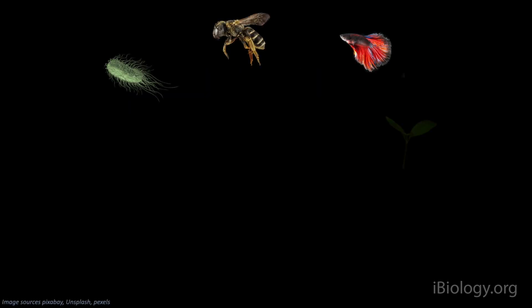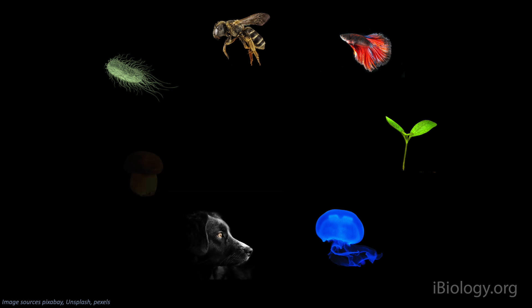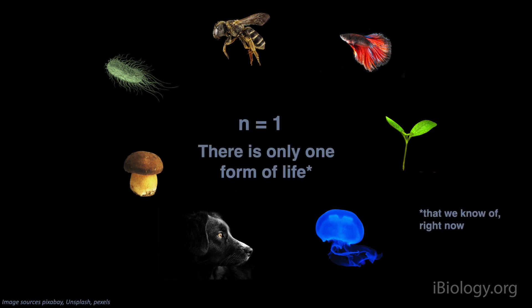You can see the incredible diversity of life around us, and we all know that there's so many different forms of living organisms. Looking at it, it's hard to believe that from the scientific point of view, there is really only one life form on Earth.